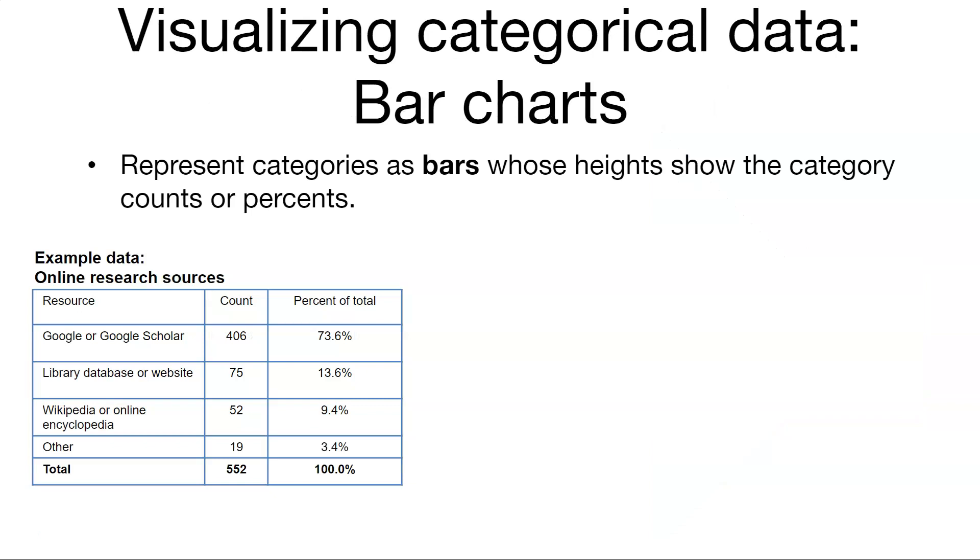What are some tools that we can use to visualize data? We'll start with categorical data. Bar charts. You've all probably seen bar charts before but this is where we represent categories as bars. One example data source that we're going to look at with a couple of graphs here is this example of asking students what they use when they do online research. Most students said that they use Google or Google Scholar.